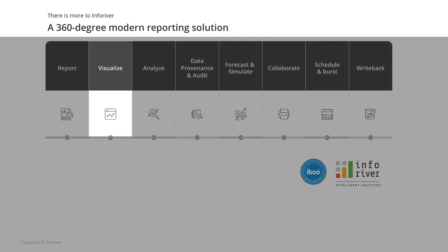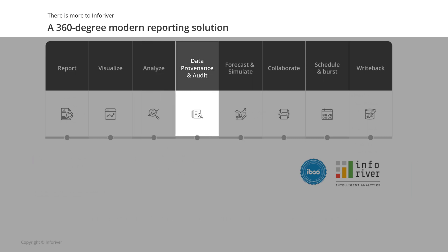You can build table or matrix-style reports that incorporate a wide variety of in-cell visualizations like a bullet chart. You can leverage advanced analysis capabilities to create derivative measures and columns at the visual level. You can keep track of key changes to your report along with username and timestamp information using the data governance and audit module.